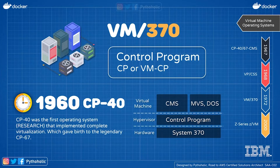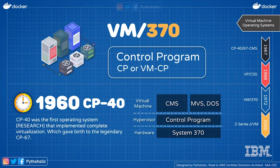The virtual machine ran on top of a time-sharing operating system like CMS, also known as Conversational Monitor System. So your hardware was System 370, your hypervisor was CP, and the time-sharing operating system was CMS, which was later succeeded by VBCSS in 1968. Then in 1972 we had full hardware virtualization using VM370.